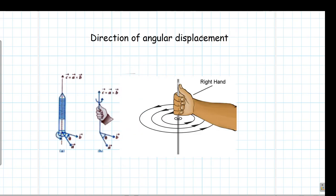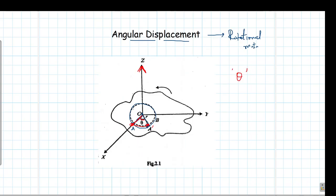To determine the direction of angular displacement, we use the right-hand screw rule, also called the right-hand grip rule. Hold your hand such that your four fingers — index, middle, ring, and little finger — trace the direction of the circular or rotational motion. When your fingers follow the direction of rotation, your thumb points in the direction of the angular displacement. So angular displacement theta is a vector whose direction is found by the right-hand screw rule.